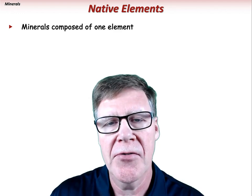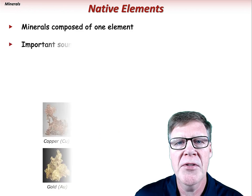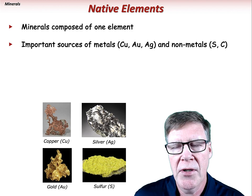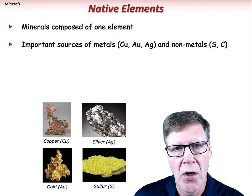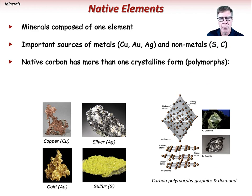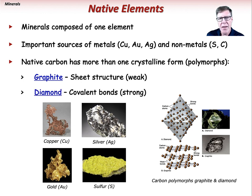Native elements are minerals composed of only one element. They are important sources of metals like copper, gold, and silver, as well as nonmetals like sulfur and carbon. Native carbon has more than one crystalline form, making it a polymorph. One polymorph of carbon is graphite, which has a sheet-like atomic structure that makes it relatively weak. Conversely, diamond is a carbon polymorph having strong covalent bonds and is one of the hardest known minerals.